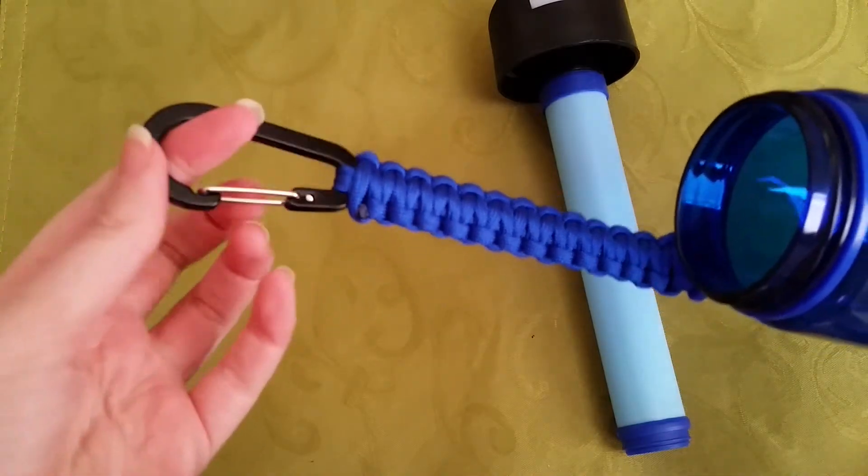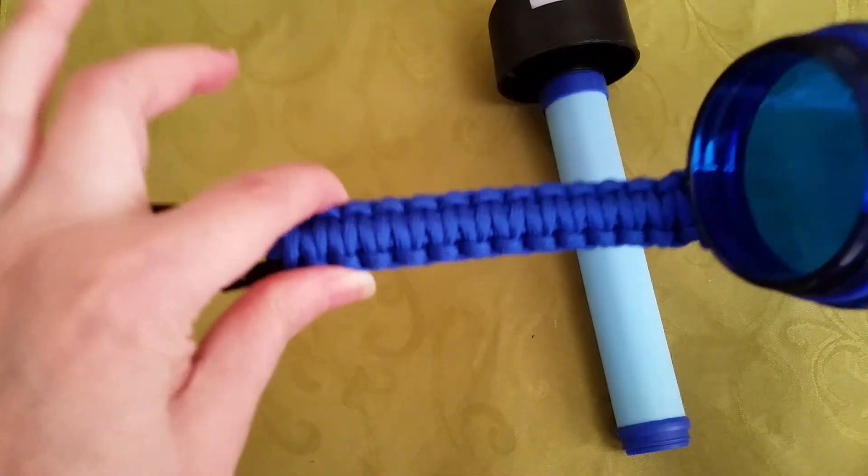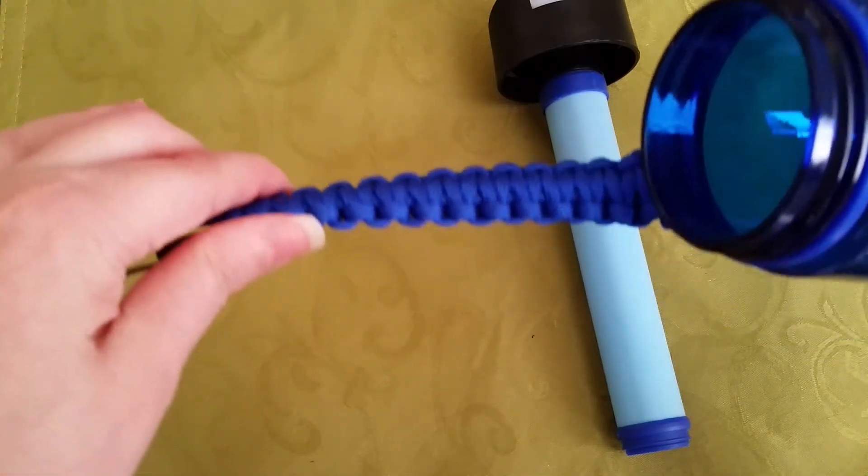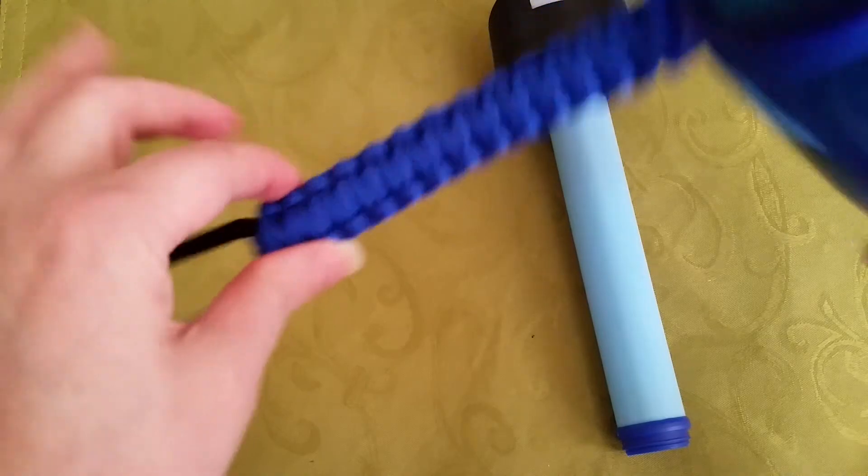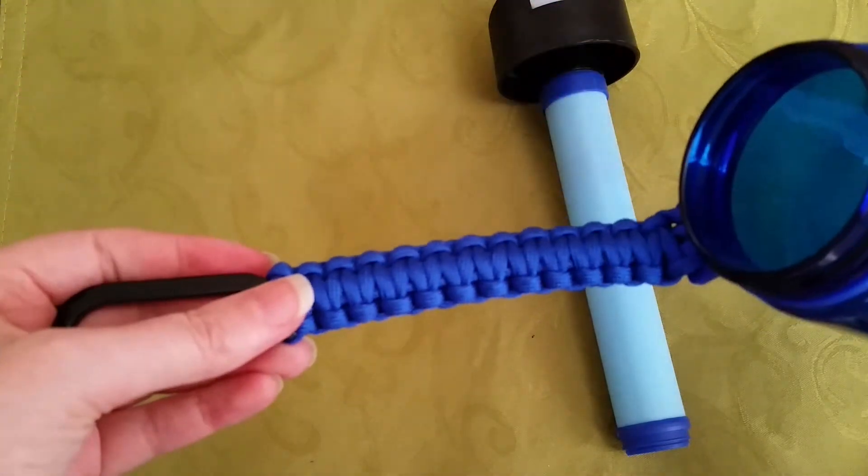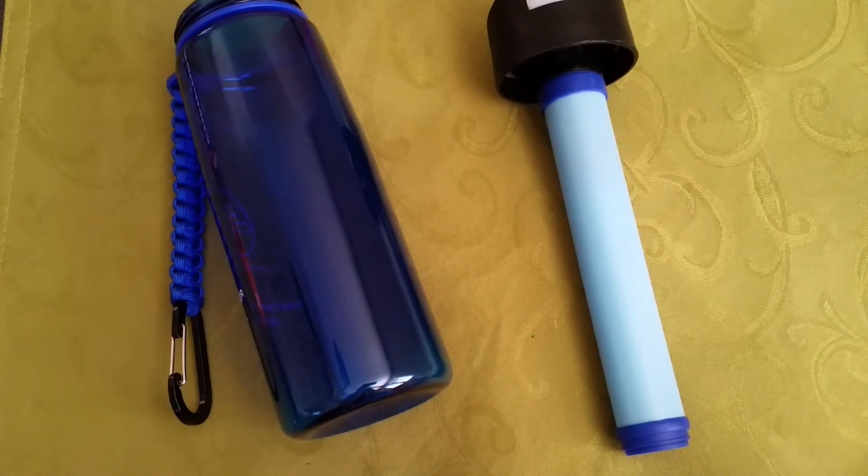It has this paracord attached to it, which is a great feature. I love this with this little carabiner. This is approximately 7 feet. So if you needed in an emergency to bind something or tie something or as an extra shoelace, anything like that, this is like 7 feet right there for you. So that's everything I have for you on this product today.